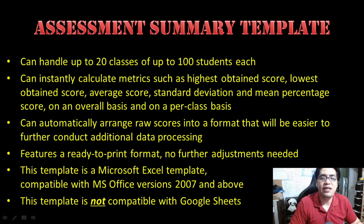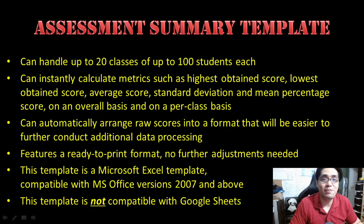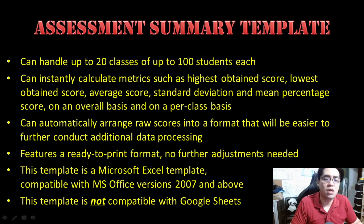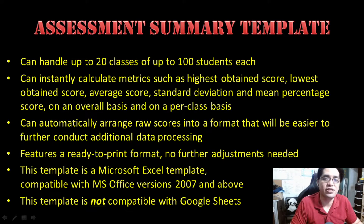This Assessment Summary Template can automatically arrange raw scores into a format that makes it easier to conduct additional data processing. It also features a ready-to-print format — no further adjustments needed, no adding columns, subtracting rows, or deleting cells. All you have to do is enter the values and it's ready to print. This template is a Microsoft Excel template, compatible with Microsoft Office versions 2007 and above. Please note it is not compatible with Google Sheets, so you cannot use it online. Please download the template and use it offline with compatible Excel spreadsheet programs.